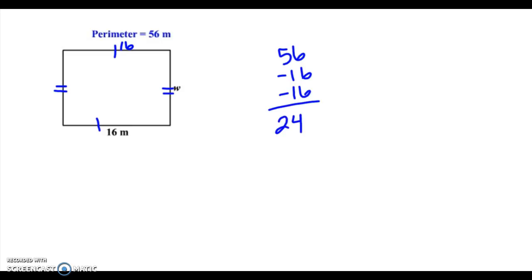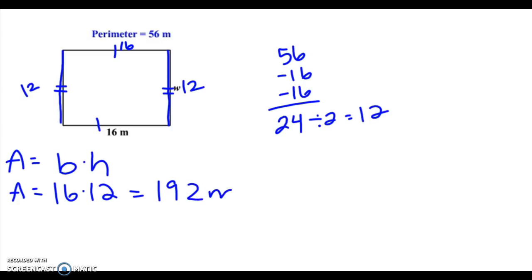And I know that these two sides here add up to 24. So if I divide 24 by 2, I end up with 12. So now I have all of my side lengths. Now if we're trying to find the area, I'm going to take base times height. And I'm going to take 16 times 12. And I get 192 meters squared.